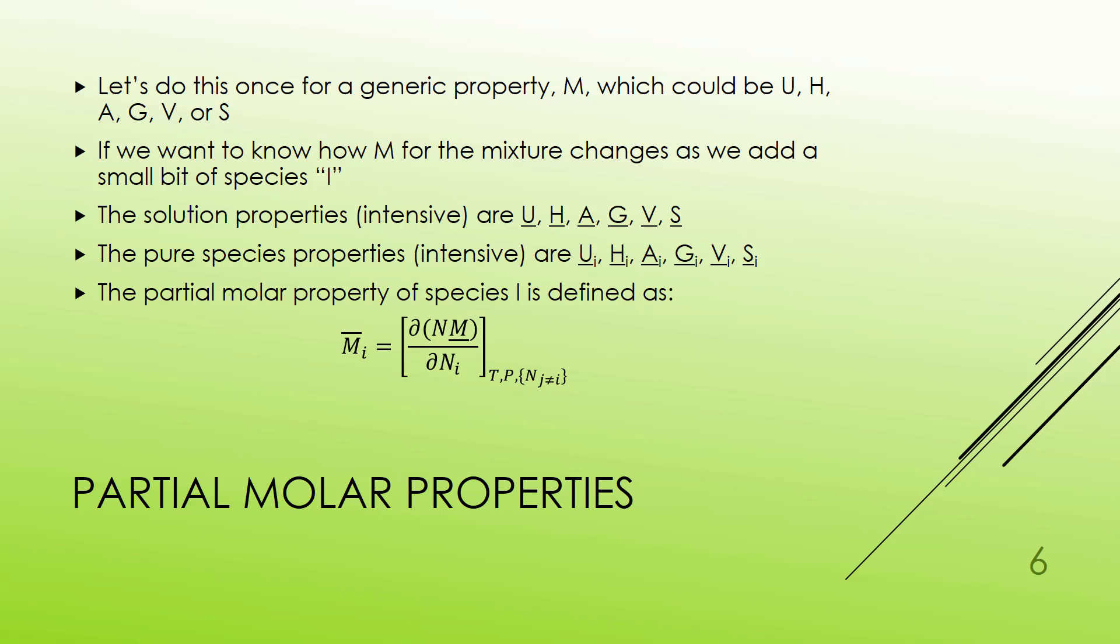A partial molar property of the species is simply by definition how the extensive quantity M, or N times the number of moles times the intensive property M. So how the extensive property M changes if I were to add just a teeny bit of species I and I held everything else constant. I'm going to keep the temperature constant, the pressure constant, and the number of moles of all of those other species constant. I'm going to drop one extra kitten into the room. This would be my partial molar property.